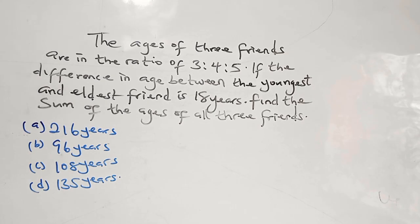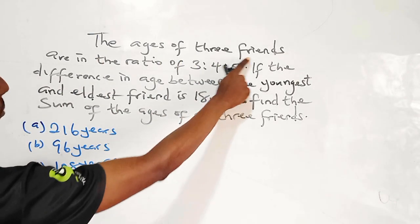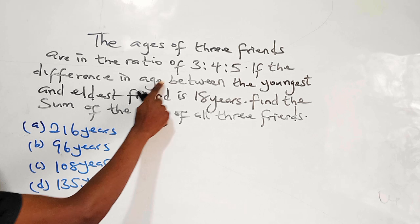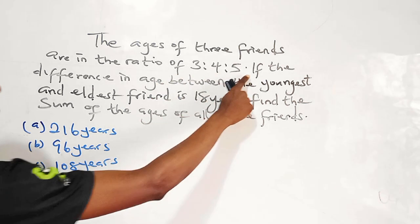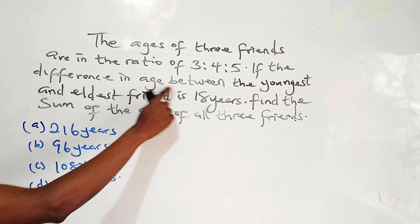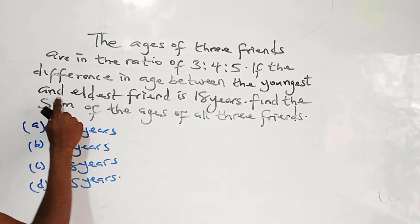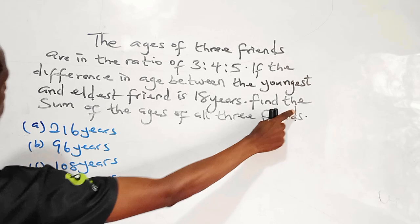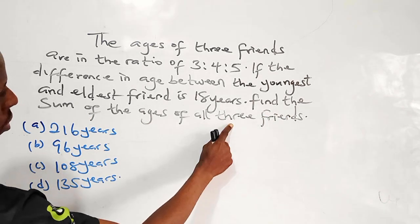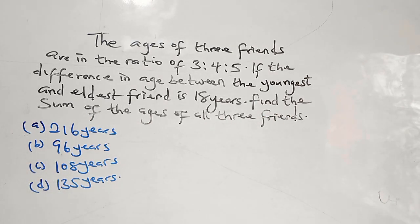The question says the ages of three friends are in the ratio of 3 ratio 4 ratio 5. If the difference in age between the youngest and the eldest friend is 18 years, find the sum of the ages of all three friends.